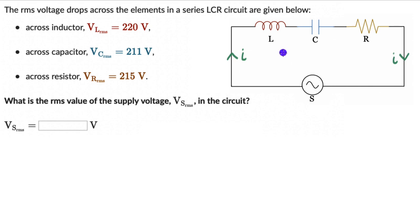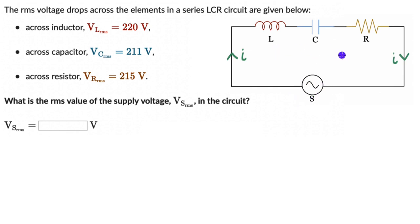Here we have an inductor, a capacitor, and a resistor. So to find the supply voltage, we can find the resultant of the voltage across L, C, and R. To find the resultant voltage, we could use Kirchhoff's second law — KVL — but it turns out the math becomes very complicated; we'd have second-order differential equations. An easier way is to use phasor diagrams.